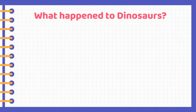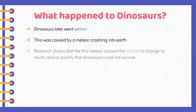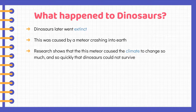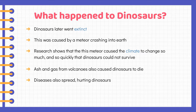What happened to dinosaurs? Dinosaurs later went extinct. This was caused by a meteor crashing into the Earth. Research shows that this meteor caused the climate to change so much and so quickly that dinosaurs could not survive. Ash and gas from volcanoes also caused dinosaurs to die. Disease also spread, hurting dinosaurs.